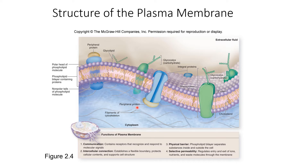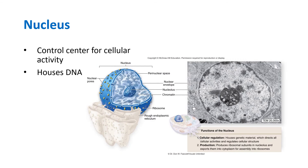There are also peripheral proteins, which are not embedded inside the plasma membrane — that is why we call them peripheral. We are also going to talk about the filaments of the cytoskeleton, which are protein fibers that maintain the shape of our cells.